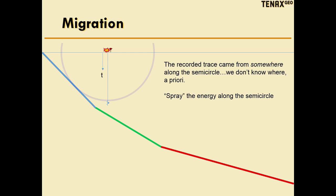So what the process of seismic migration does digitally is it essentially takes the energy on this trace and it sprays the energy along the semicircle.